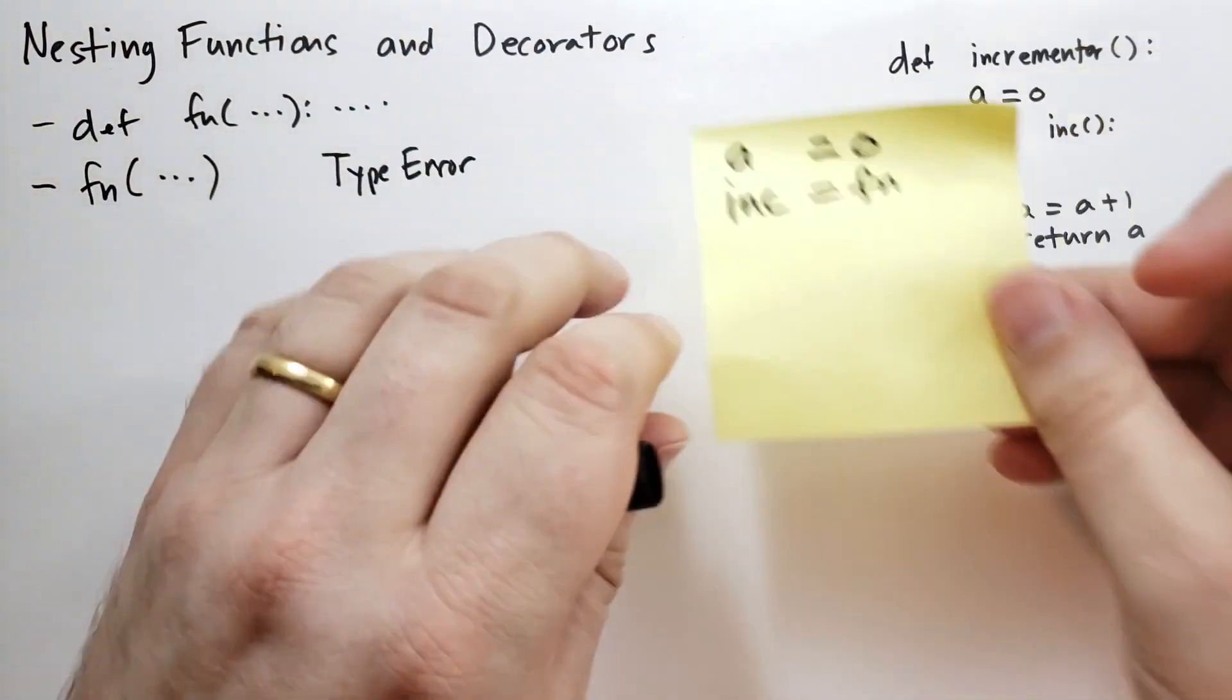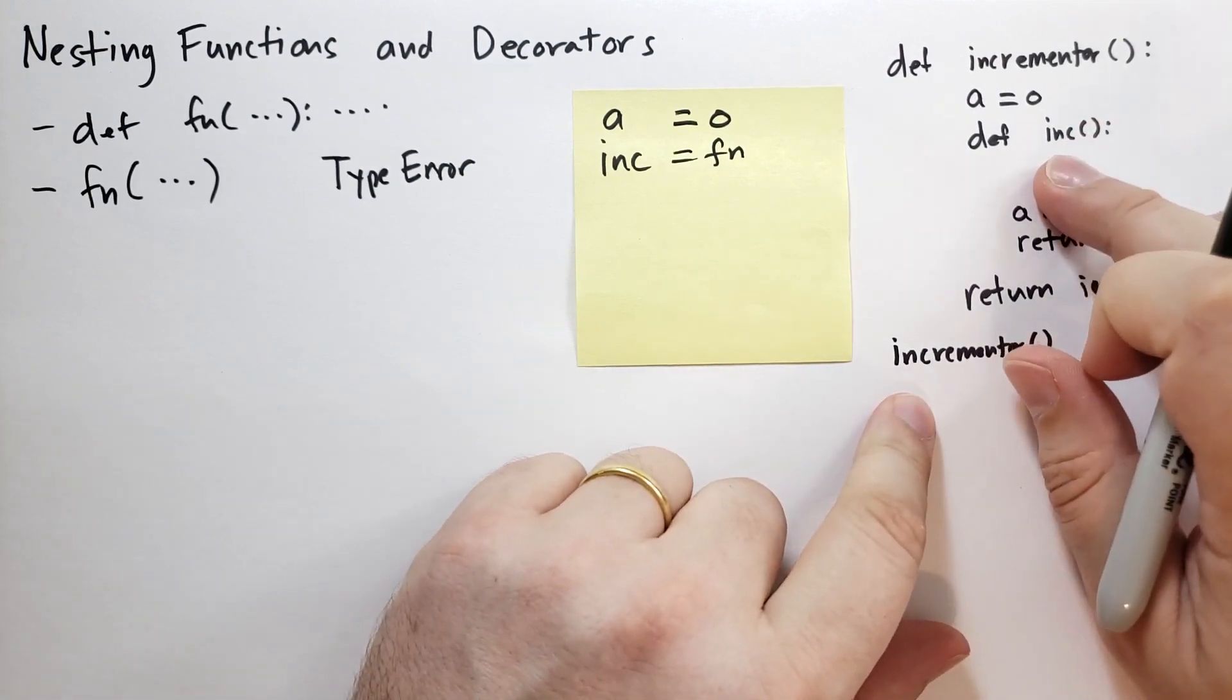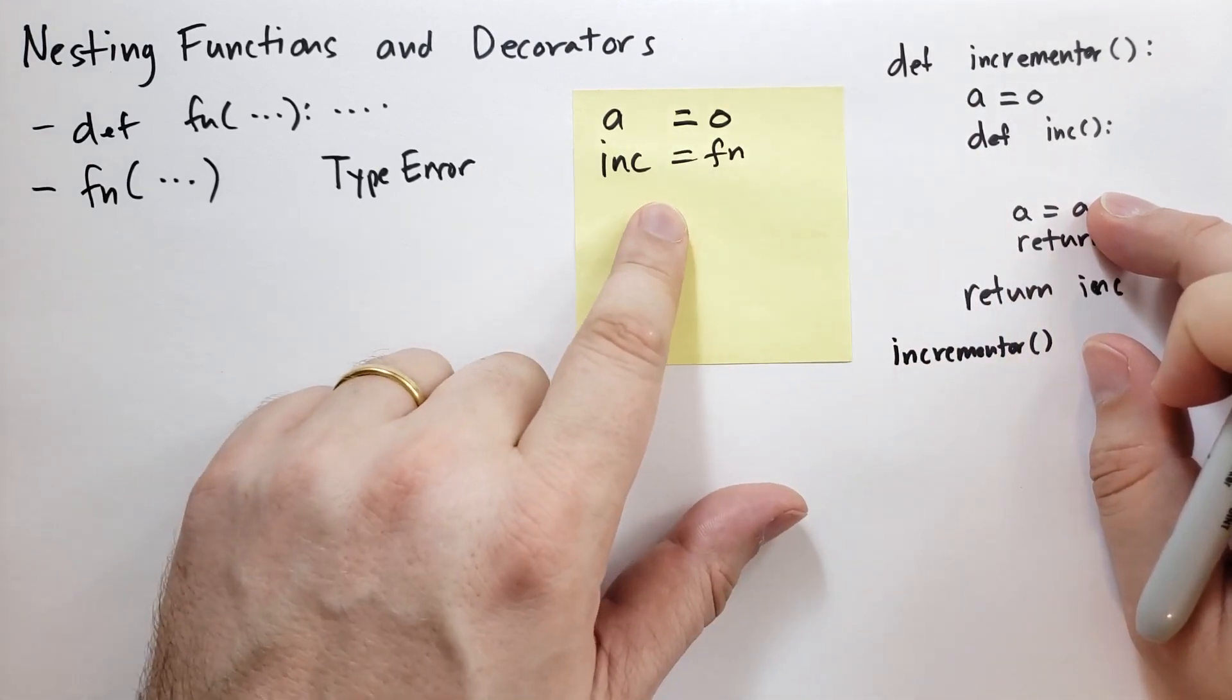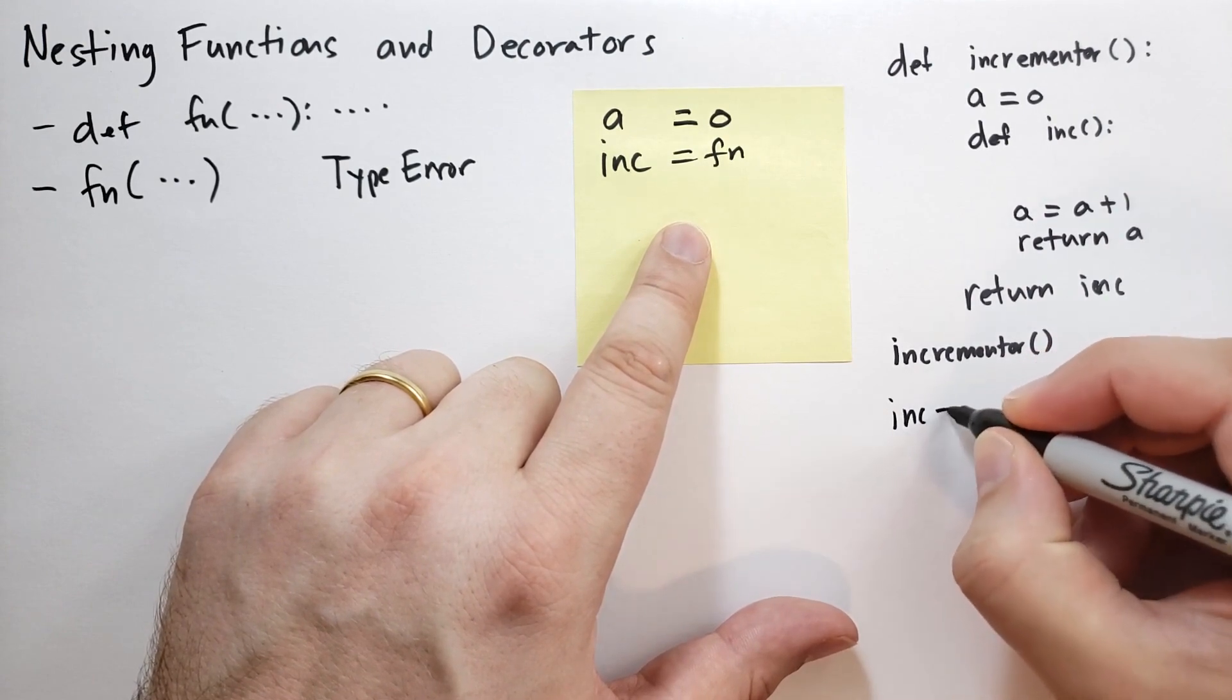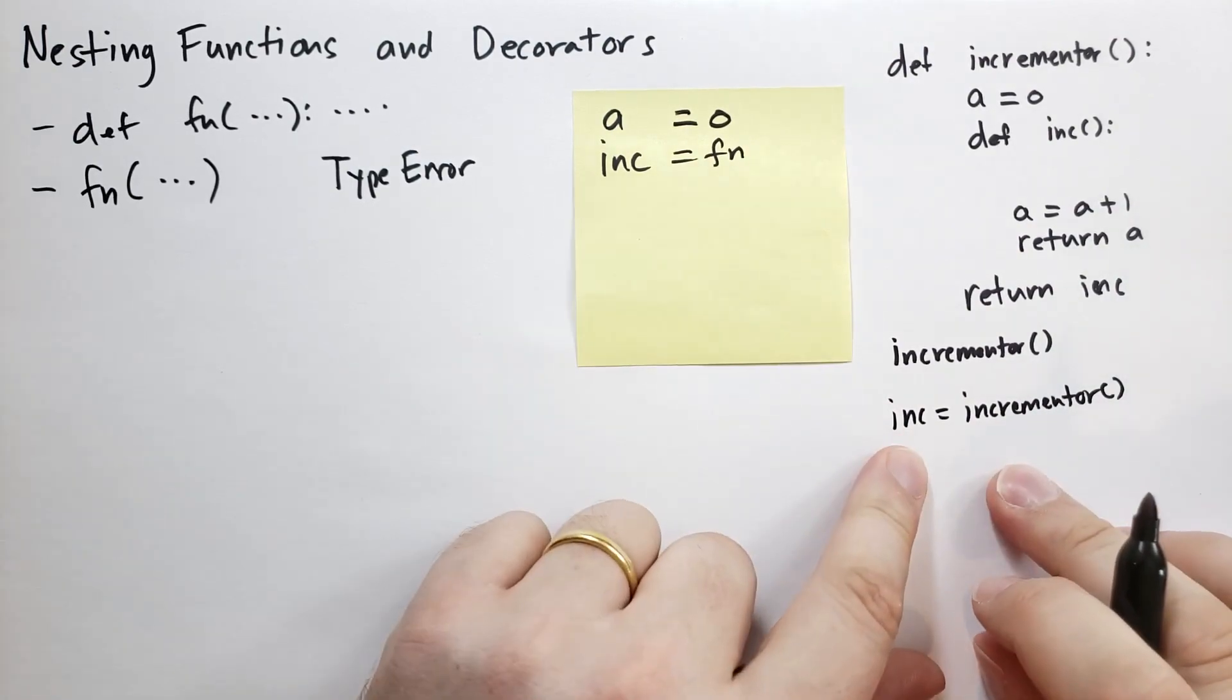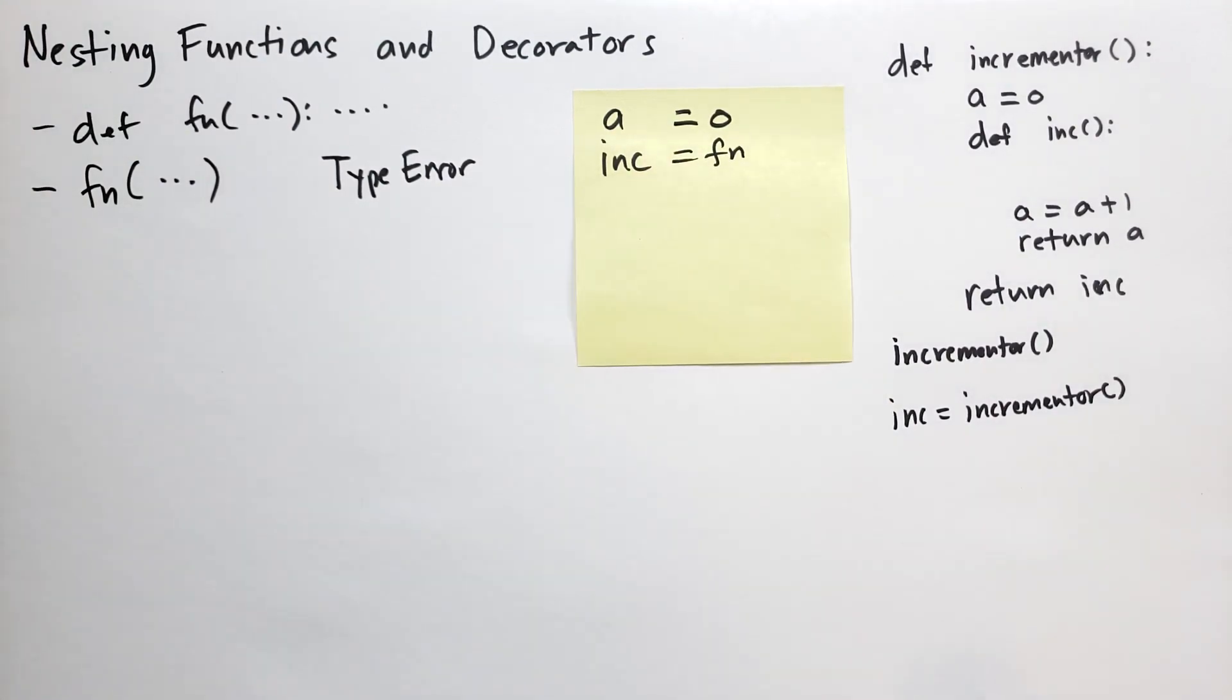Now, this frame, typically when you call a function, this frame is thrown away. It's garbage collected. It's no longer useful. But in this case, this inc function is part of this namespace and actually references the namespace. And so we're going to hold onto this. So this function that's returned. So if we remember the inc function, so we're going to say inc is equal to incrementor. Now this inc variable that's in the global namespace is going to reference a function that is defined in this namespace. So this namespace continues to exist.